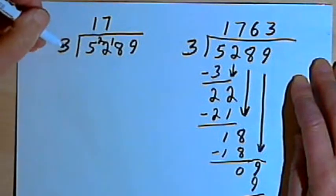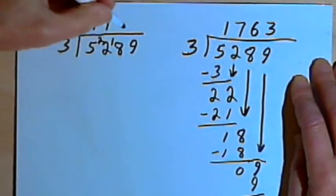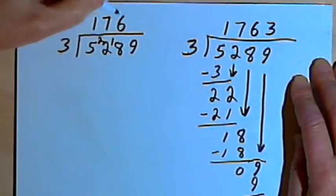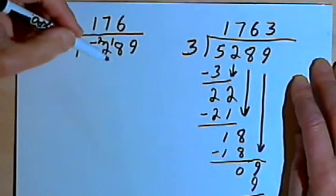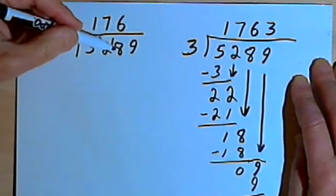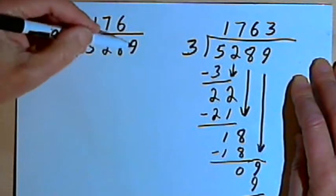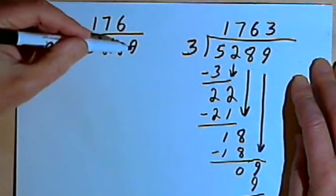Now I want to divide 3 into the 18. 3 goes into 18 6 times. I'll write the 6. Multiply 6 times 3, which is 18. So 18 minus 18 is 0. So there's nothing to put in front of the next digit, which is a 9.